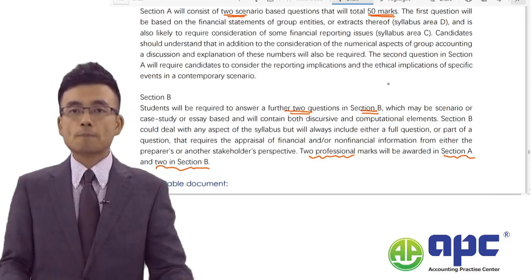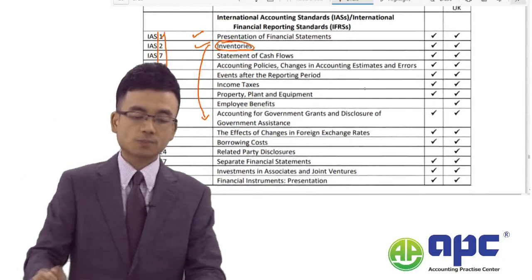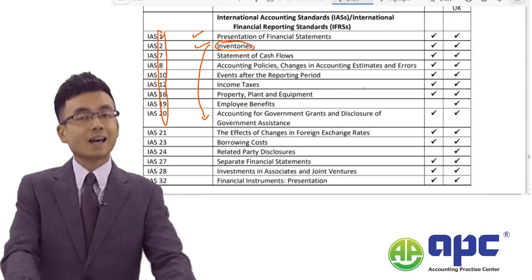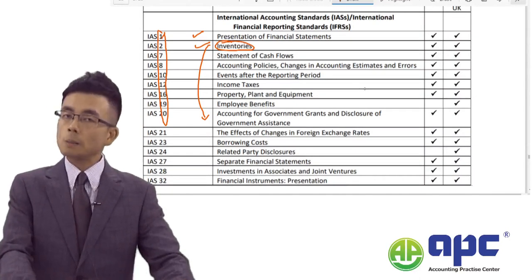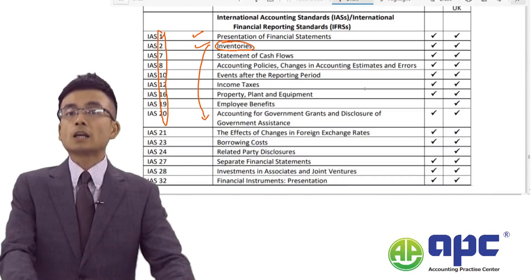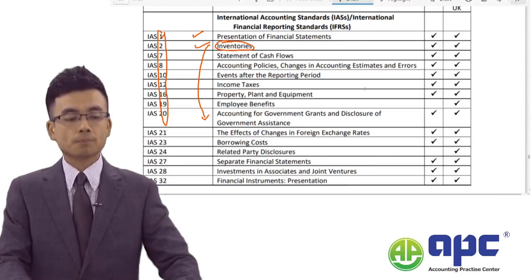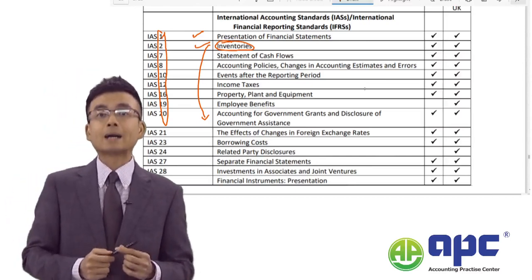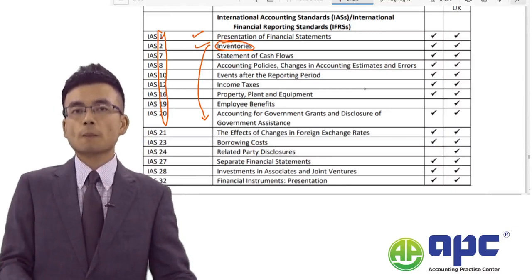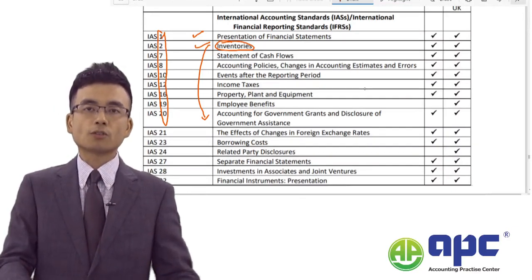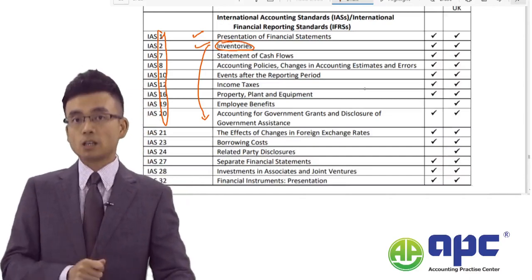The key to passing the SBR is not memorising the numbers of accounting standards — you can simply say 'per IFRS on inventories' instead of 'IAS 2 inventories' and still gain full credit. The key is to focus on the written part: be absolutely familiar with accounting standard knowledge, and when applying it to case scenarios, remember that one mark equals one point. Follow that principle and you will surely pass this paper.